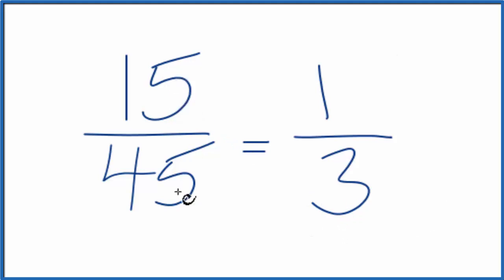If you didn't know that 15 goes into 45 evenly, you might try 5. Five into 15 is 3, and 5 goes into 45 nine times.